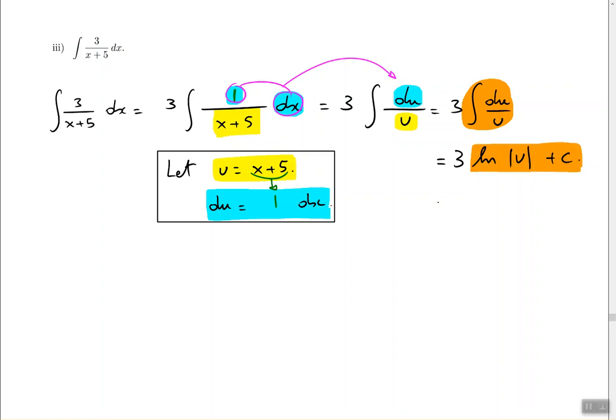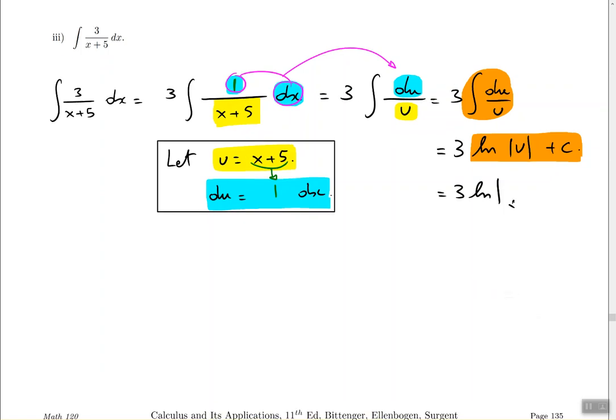And finally, we erase the letter u and replace it with the original amount of x's. In this problem, the u is supposed to replace x plus 5. So that's what we're going to do. We're going to replace it with x plus 5. Put the plus c there. And call it a day. This is it.